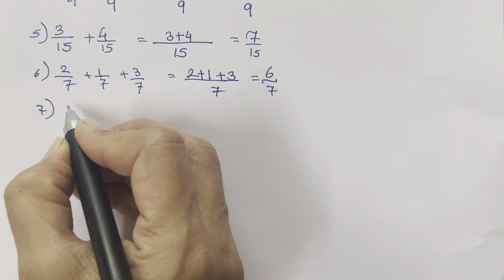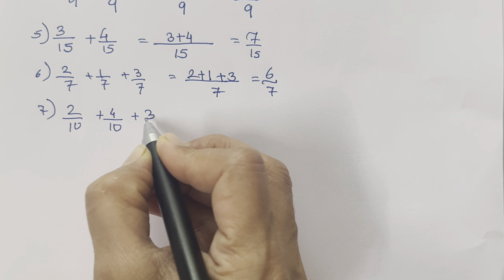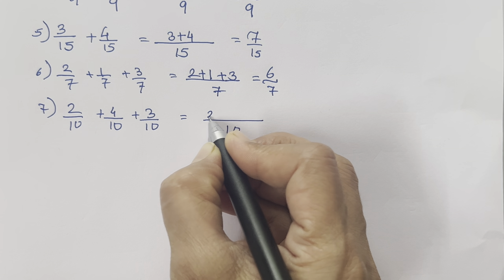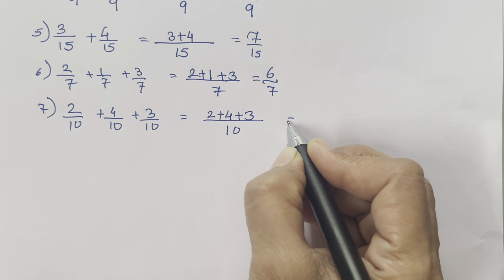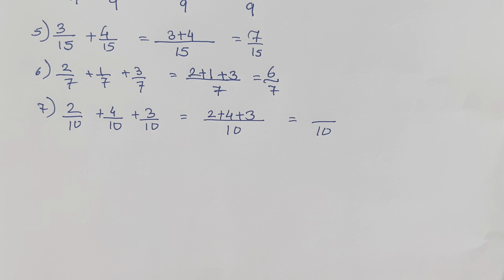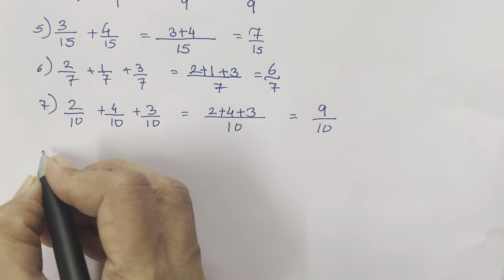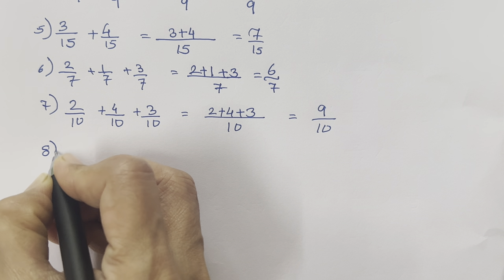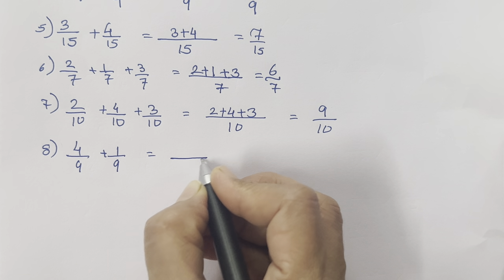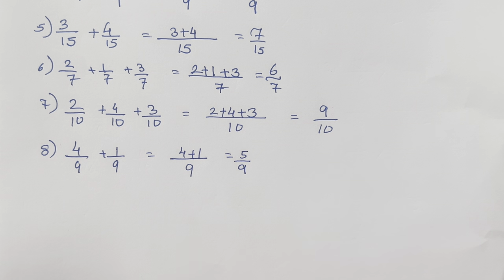Next is the seventh one: 2 upon 10 plus 4 upon 10 plus 3 upon 10. The denominator is 10. 2 plus 4 is 6, plus 3 is 9. So the answer is 9 upon 10. Next is the eighth one: 4 upon 9 plus 1 upon 9. Denominator is 9. 4 plus 1 is 5 upon 9.